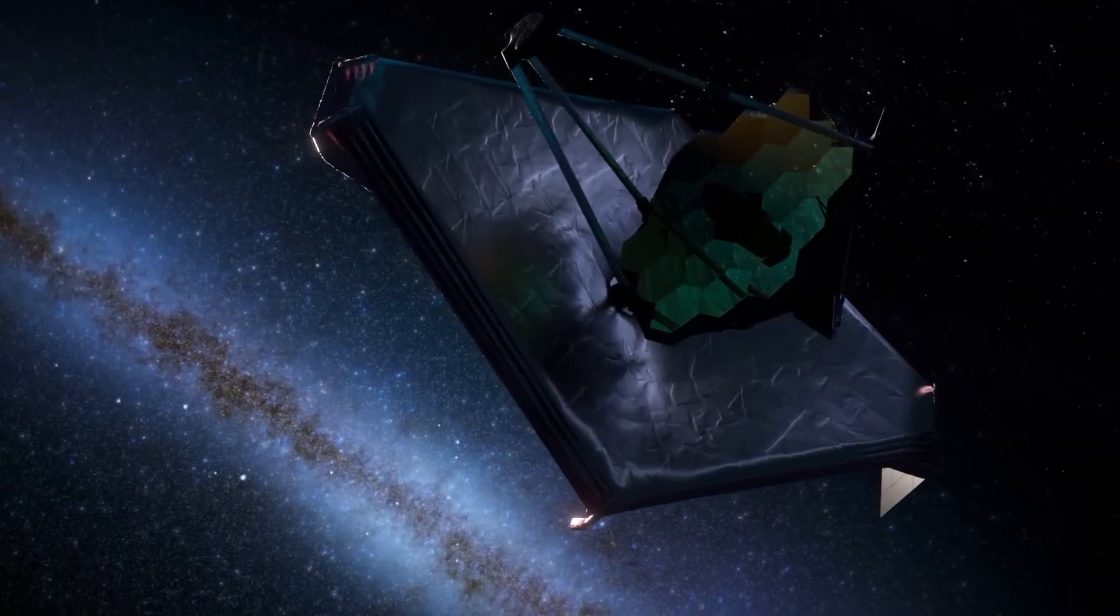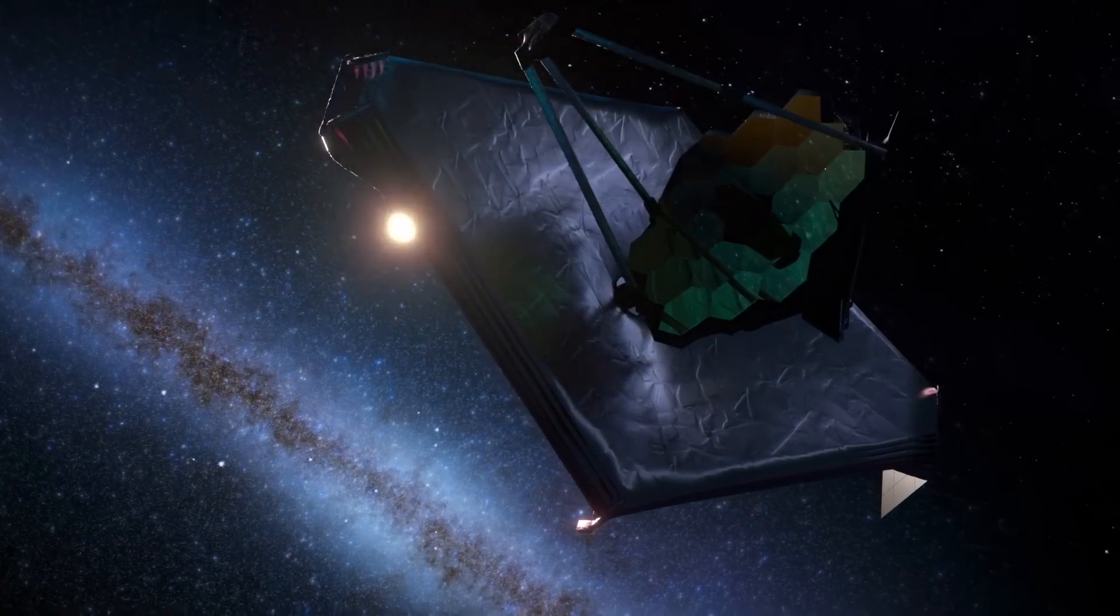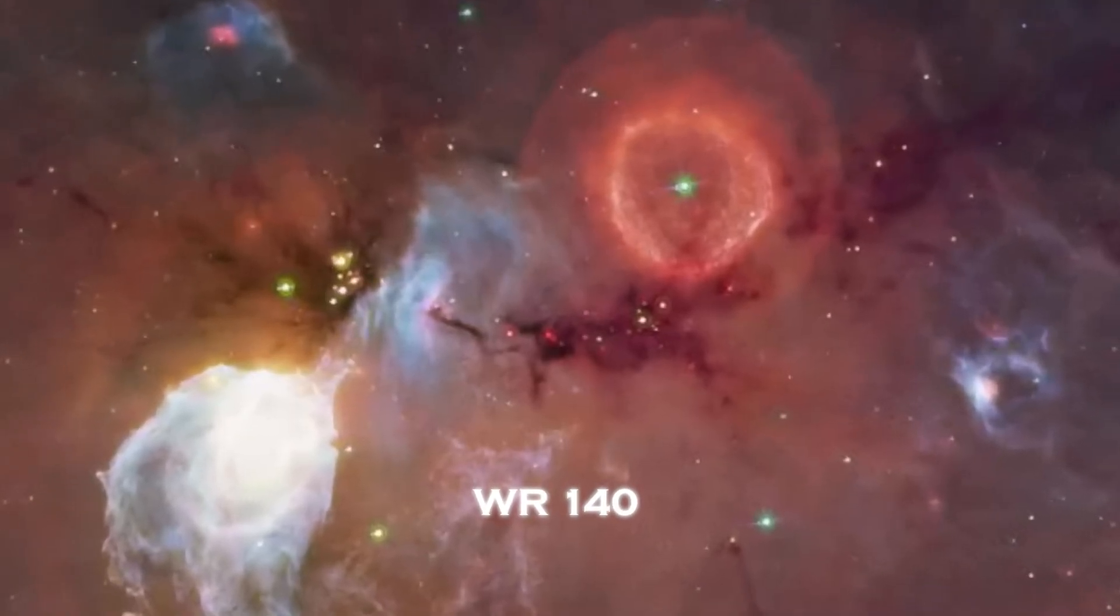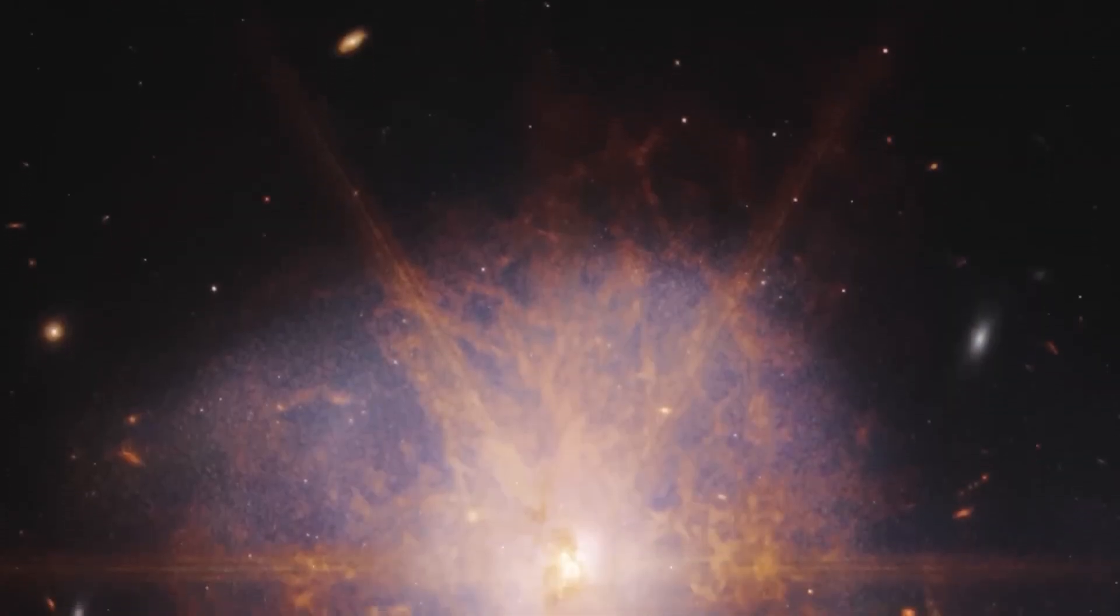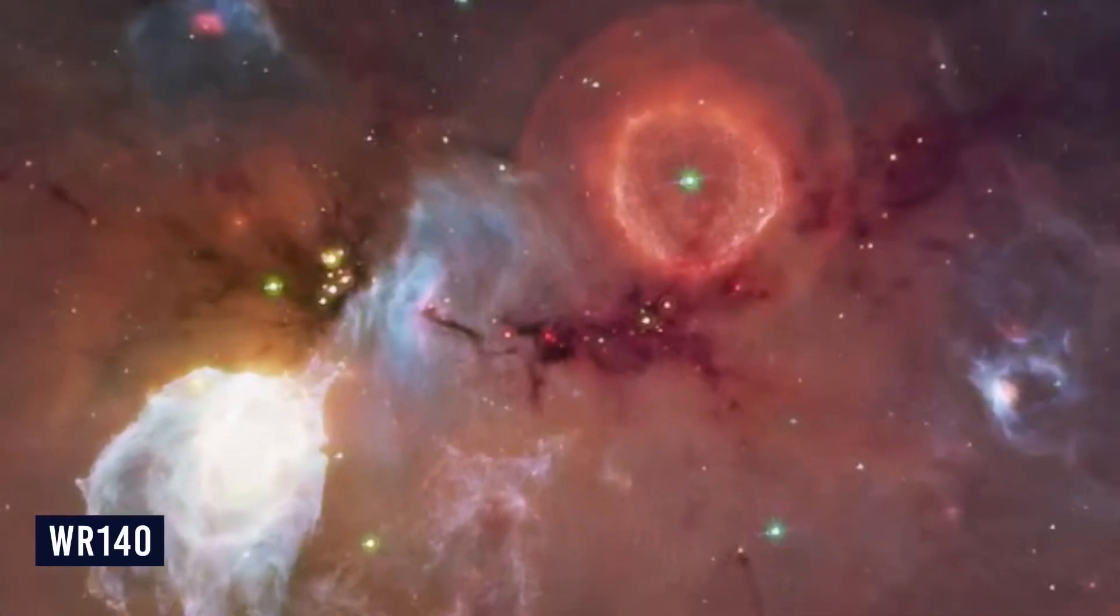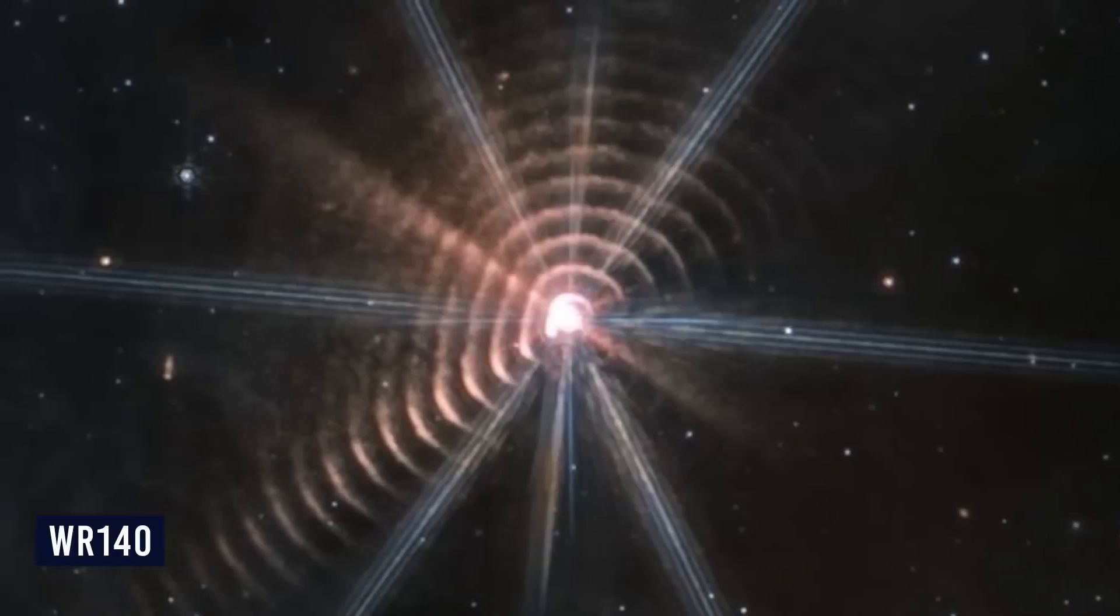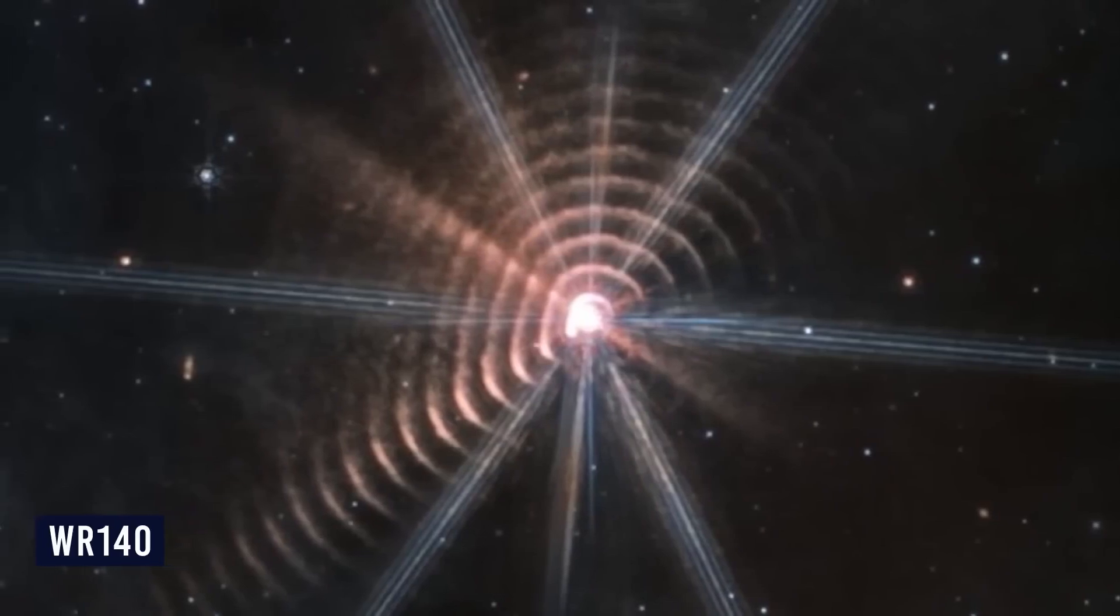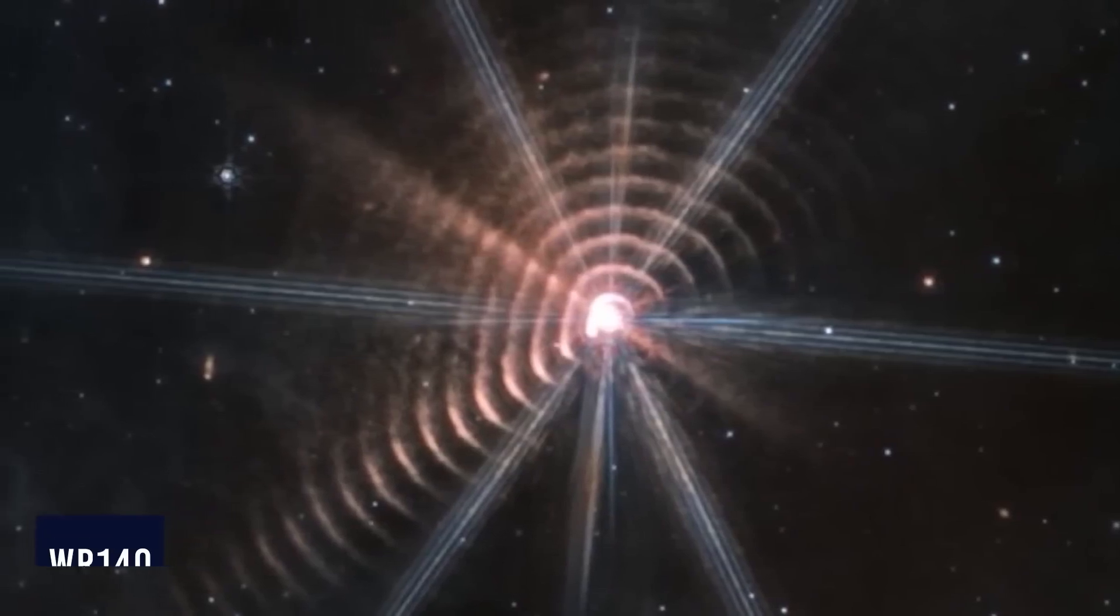Webb's exploration didn't stop there. It turned its instruments toward WR-140, a distant star surrounded by concentric, wave-like rings. But what caught scientists off guard was the peculiar shape of these rings, slightly squared, as if in motion.